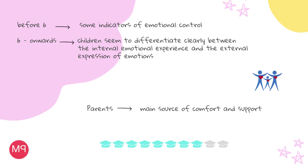After understanding their emotions, students should be able to regulate them, because depending on the circumstance, they would need to have this ability. We will show how children's auto-regulation changes depending on their ages. Before the age of six, there are some indicators of emotional control. From this age onwards, children seem to differentiate clearly between the internal emotional experience and the external expression of emotions, being able to hide their feelings from others by modifying their external behavioral expression. They are also aware that external appearance does not imply modification of the internal emotional state. From four to five years, it is possible to observe the use of certain strategies to modify an unwanted state.